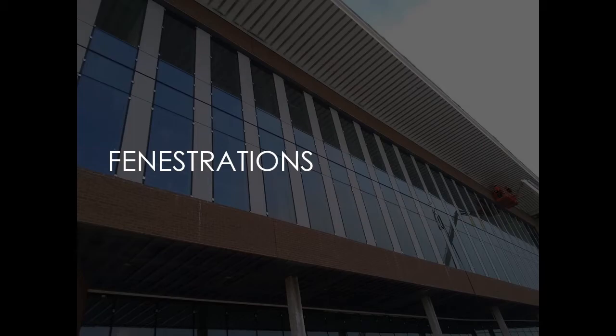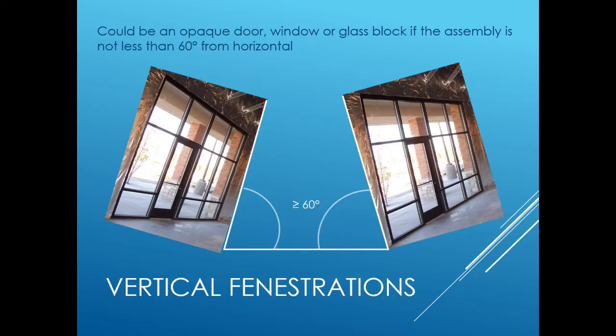Another large piece of the building's thermal envelope is the fenestrations themselves. The IECC defines fenestrations as products classified as either skylights or vertical fenestration. Vertical fenestrations include opaque doors, windows, or glass block if the assembly is not less than 60 degrees from horizontal. If the assembly is less than 60 degrees, it is considered a skylight.